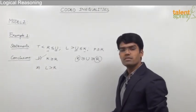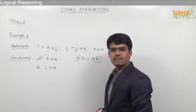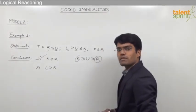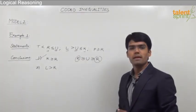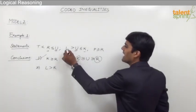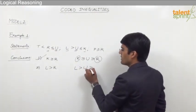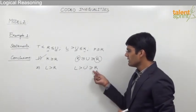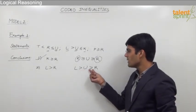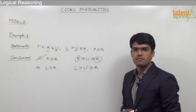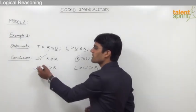Similarly, let us establish the relationship between l and r. Variable l is in statement 2 and r is in statement 1, so we again connect them using the common variable u. We can say l > u and u ≥ r. Applying rule number 2 — whenever we have similar inequalities, the common part gives the relationship — we get l > r, which is given in conclusion 2.